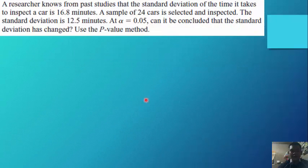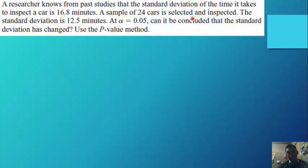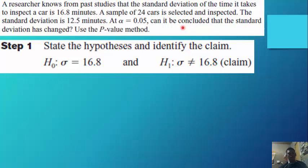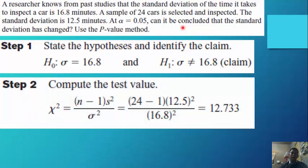Example — a researcher shows from past studies that the standard deviation of the time it takes to inspect a car is 16.8 minutes. A sample of 24 cars is selected and inspected; the standard deviation is 12.5 minutes. At an alpha of 0.05, can it be concluded that the standard deviation has changed? Use the p-value method. H₀: σ = 16.8, H₁: σ ≠ 16.8.